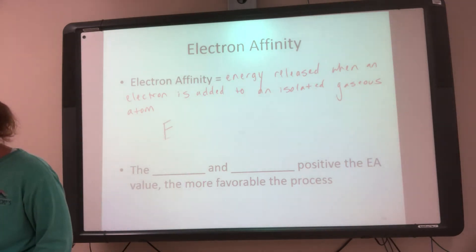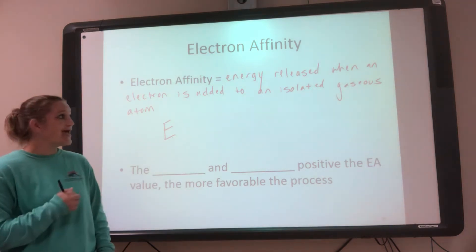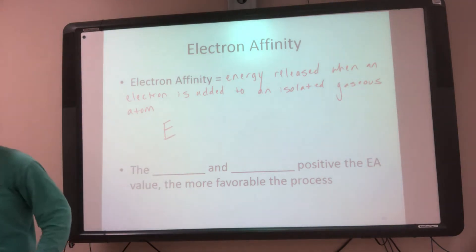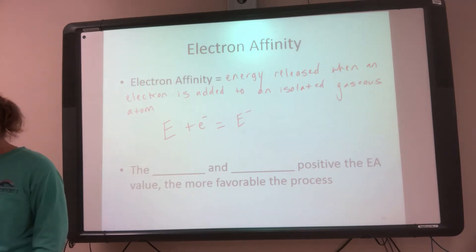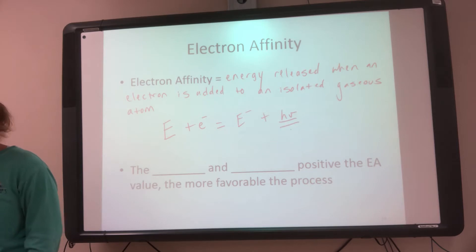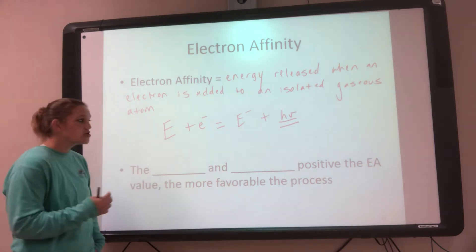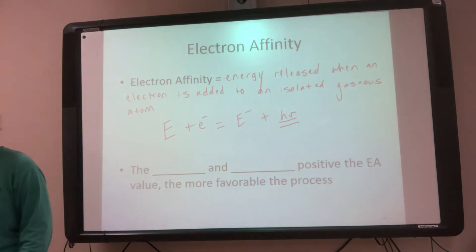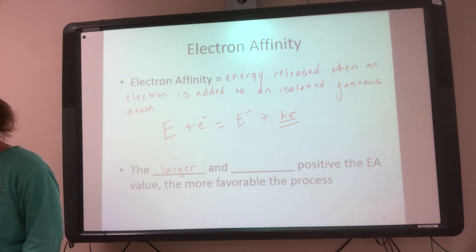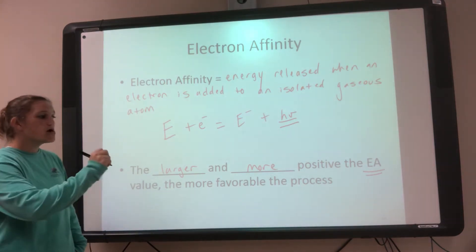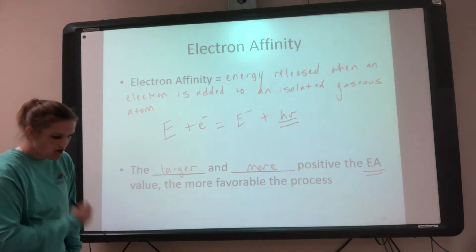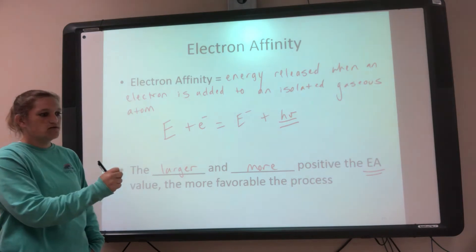So let's think about this. I have my element, and with electron affinity I'm gaining — I'm adding an electron. When you add an electron you make an anion, and when I make that anion I release energy. This is my electron affinity — this is how much energy is released. The larger and more positive the electron affinity value, the more favorable. So I want a big one. The bigger the electron affinity, the better. With ionization energy it's the opposite: the higher, the worse.